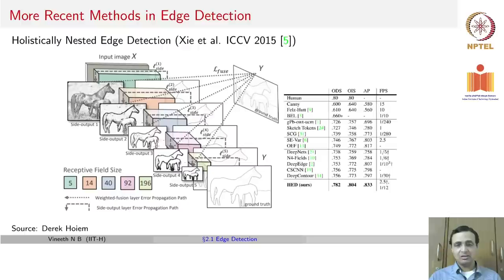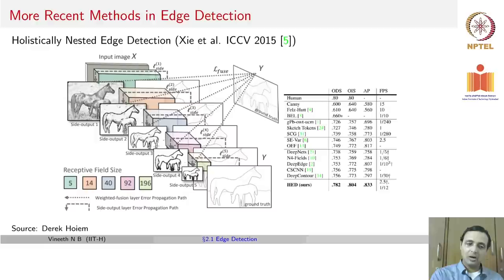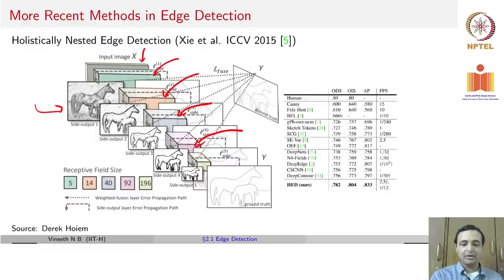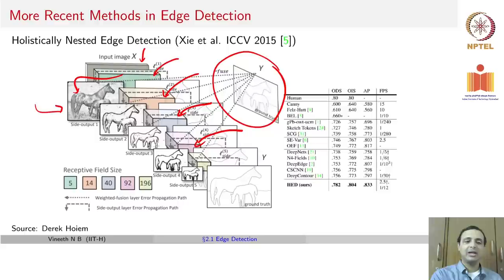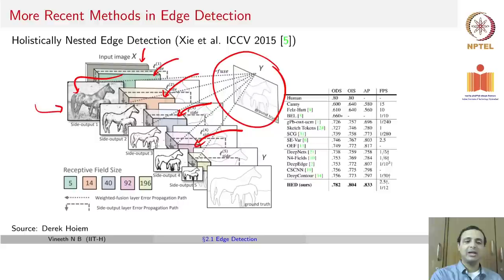One more recent method is called 'Holistically Nested Edge Detection,' a deep learning based method using convolutional neural networks to find edges. Given an input image, at the end of every convolutional layer you predict edges, compute a loss at that point, and update the weights in that convolutional layer. This is repeated multiple times to improve the performance of the network, and the final edge detection is a fusion of edges from all layers.